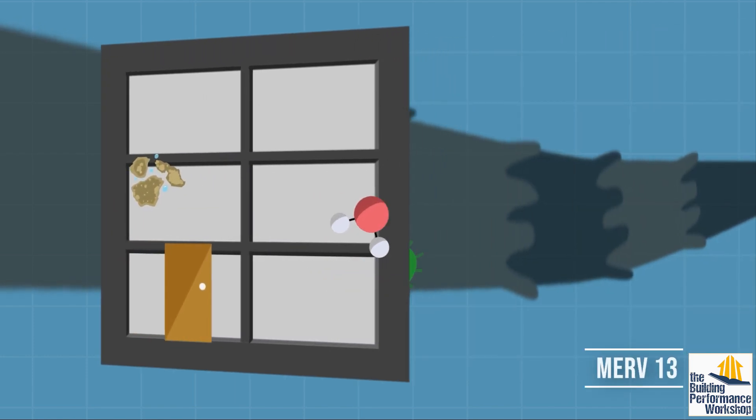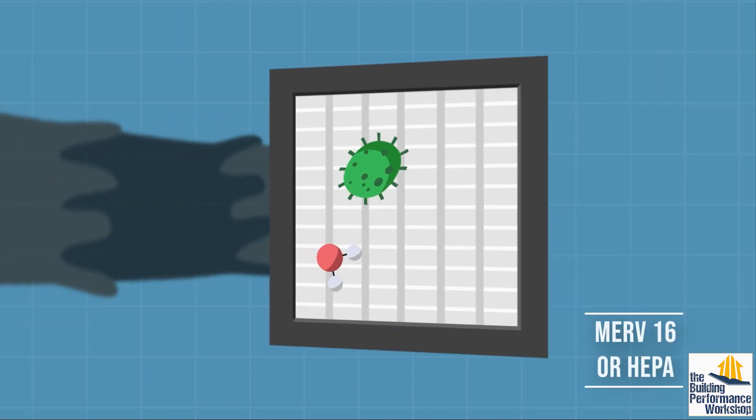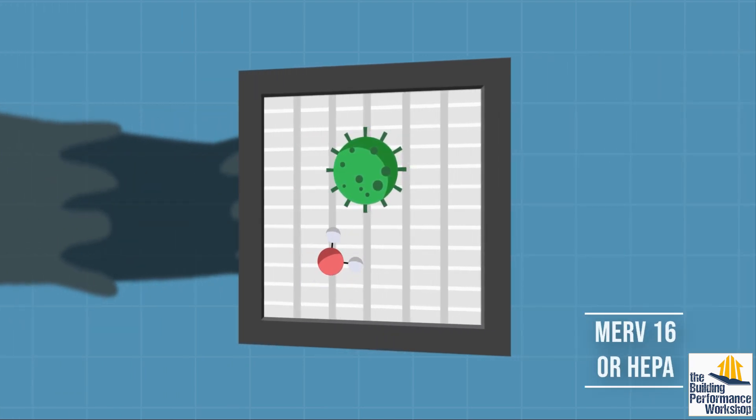If we happen to have a MERV 16 or a HEPA filter, then we can trap a virus, which has become the same size as your hand.